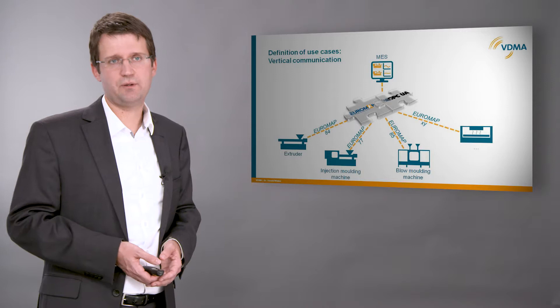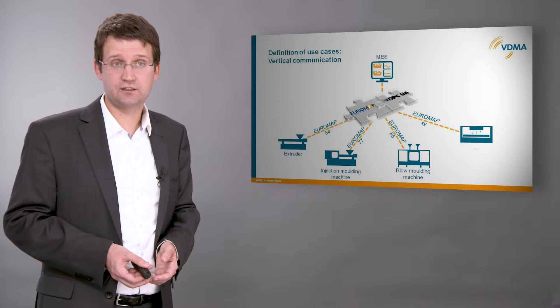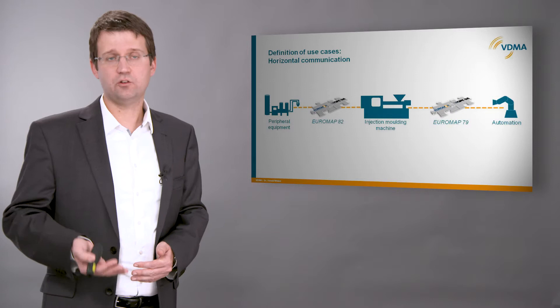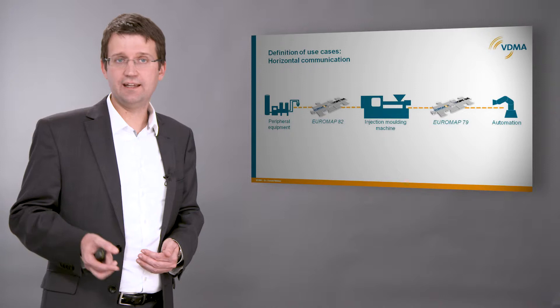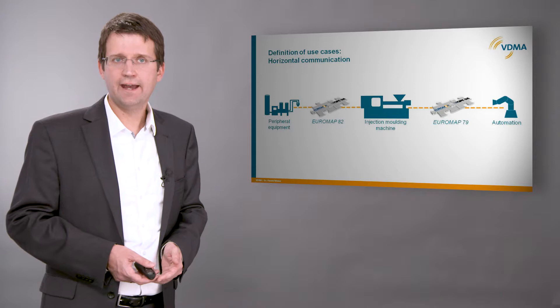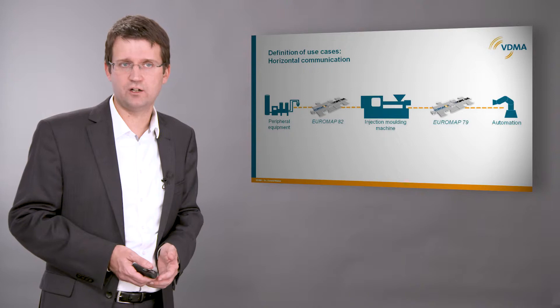For blow molding machines, a new group will start working in December this year. In the horizontal communication, the different components of process lines talk to each other. Sending and receiving data on machine status, process values, release signals and so on gives the possibility to increase efficiency and quality of the whole production line. Downstream equipment can react on input coming from upstream equipment, and this again independent from the manufacturer. Common projects for the horizontal communication are Euromap 79 for the interaction of injection molding machines and robots, and Euromap 82, which will have several parts for different peripheral devices around an injection molding machine, for example temperature control devices or dosing systems.